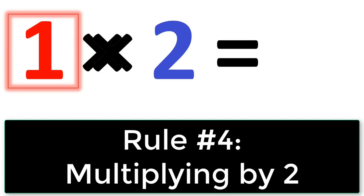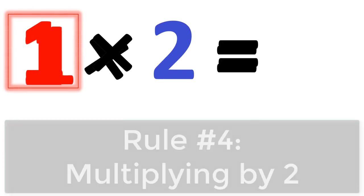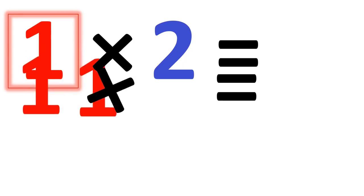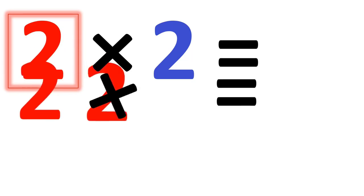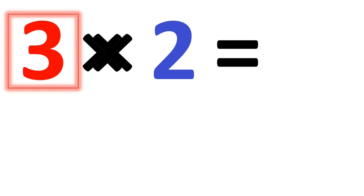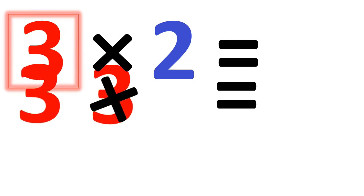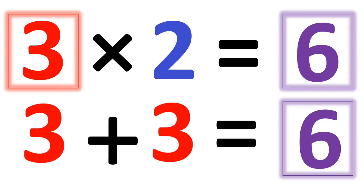The next one is multiplying anything times the number 2. There are two things you can do there. First thing you can do is, you can double the number because 2 times 2 is the same thing as 2 plus 2. 3 times 2 is the same thing as 3 plus 3. 4 times 3, etc.